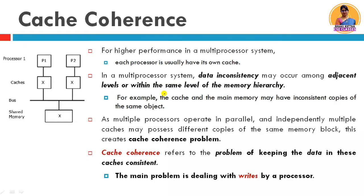What is Cache Coherence? In the previous video we revised it briefly. Generally in a multi-processing environment, where multiple processors are in one system, each processor has its own local cache and they are connected to a shared memory. If a processor has a copy of shared data in its cache and that data is updated — say X is updated to X1 — then this copy should also be updated in shared memory, plus the other processors' caches should also be updated. If this doesn't happen, there are inconsistencies and we say the cache is incoherent. This problem is called the Cache Coherence Problem.